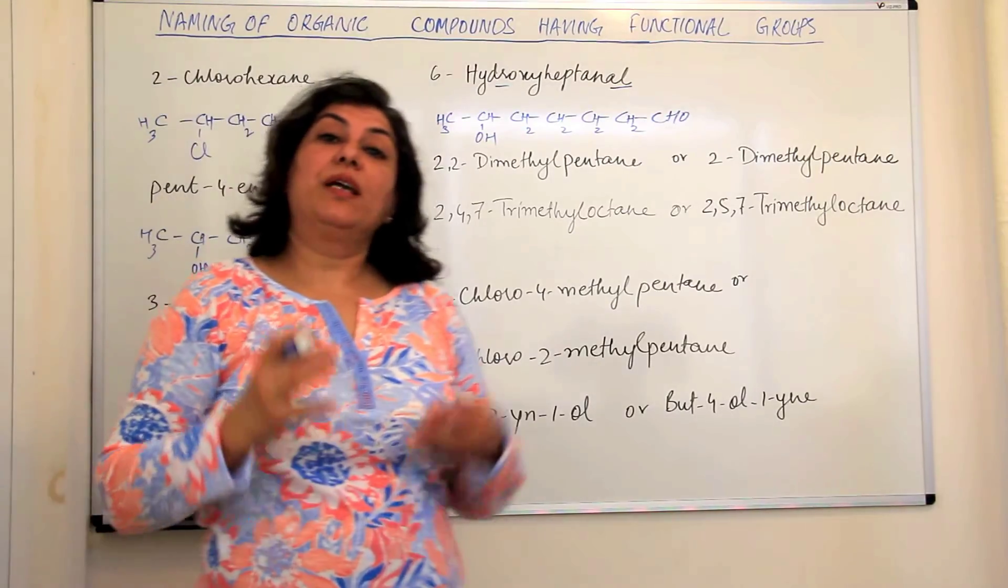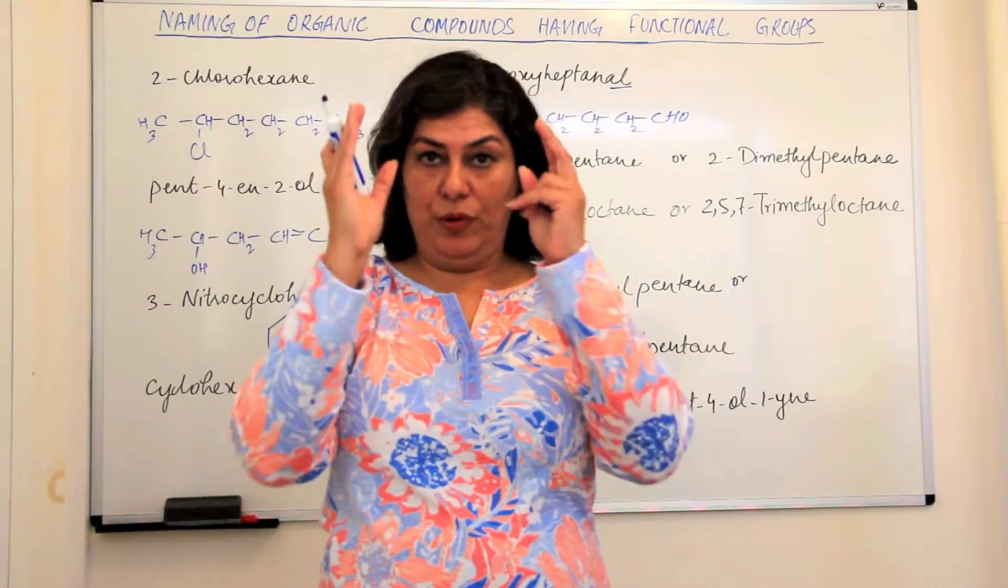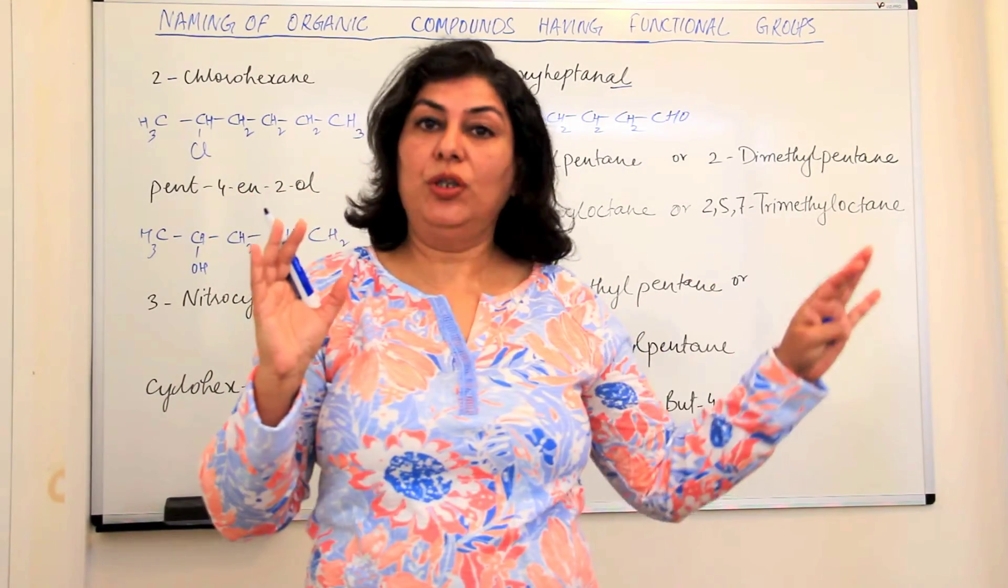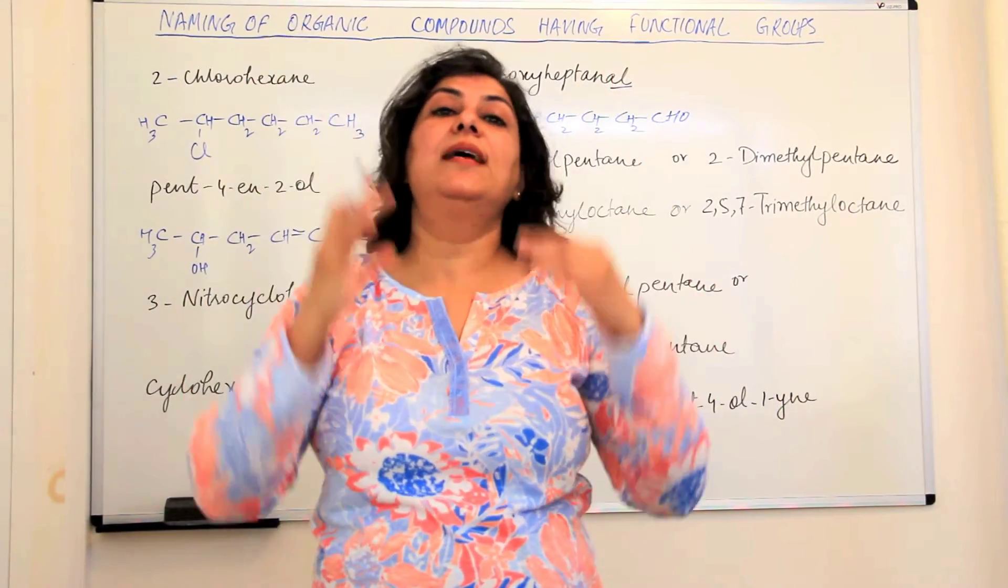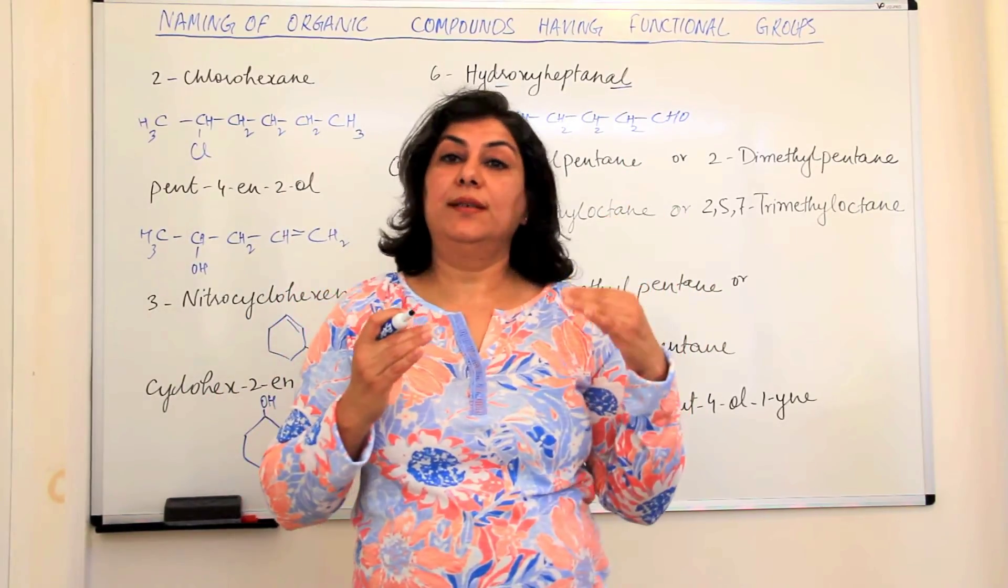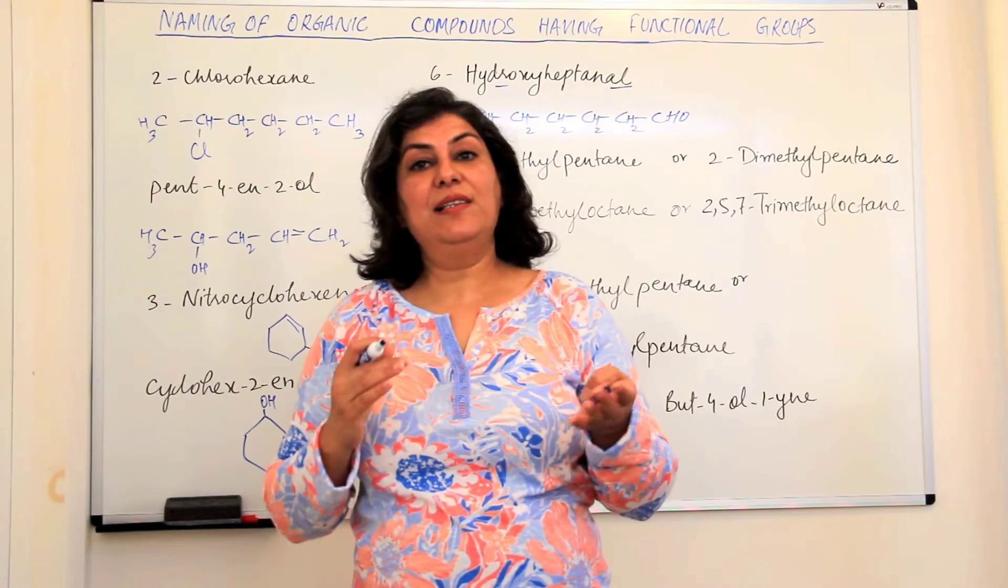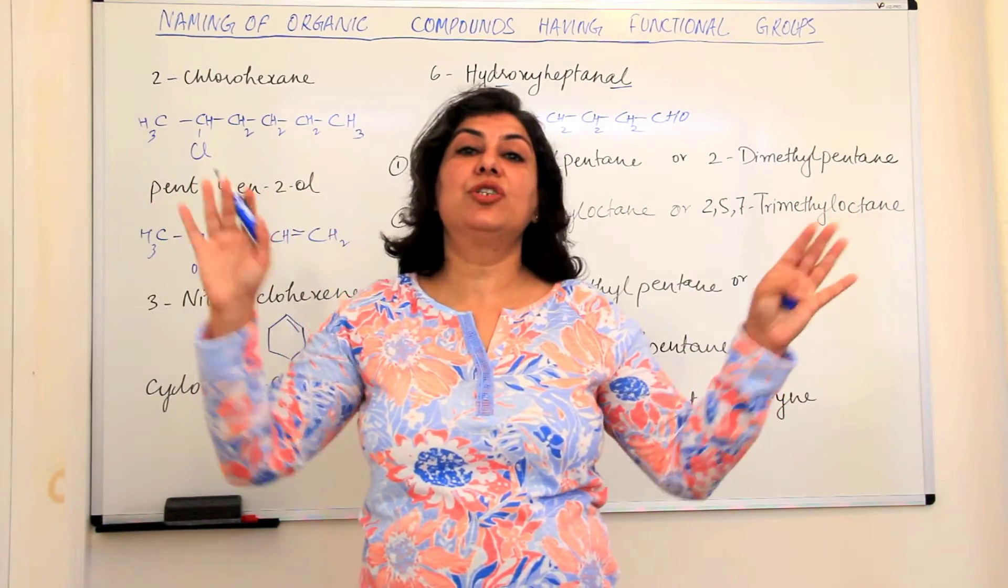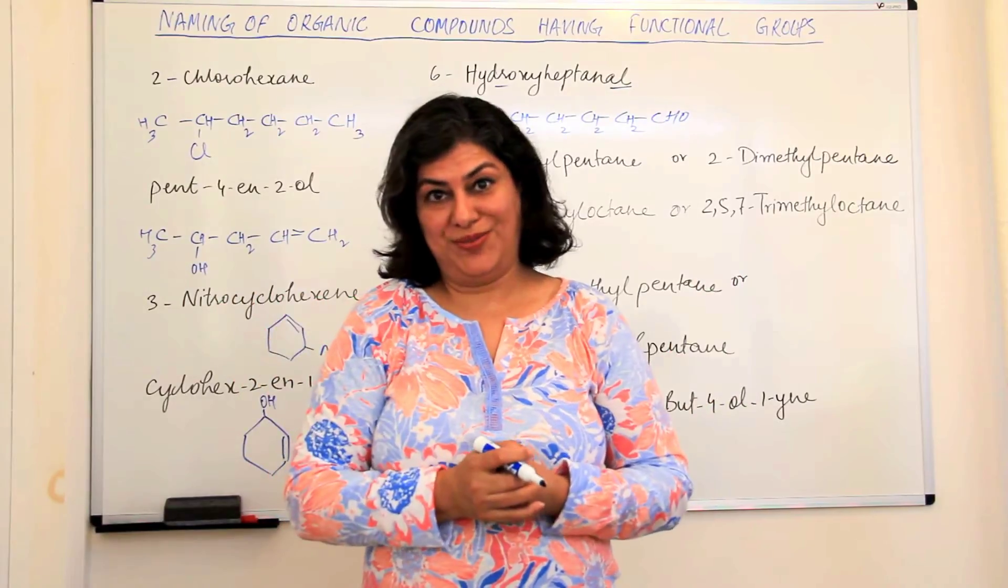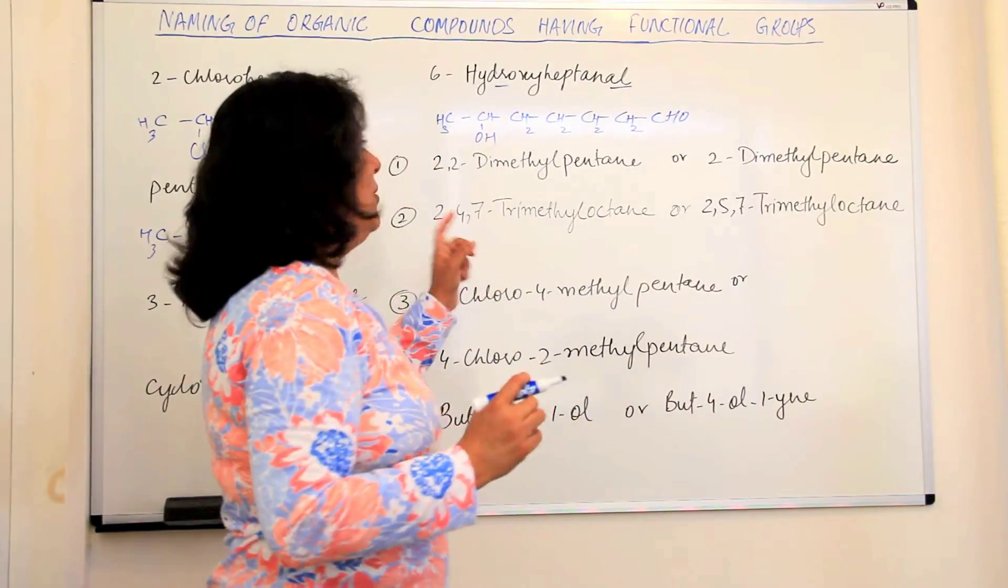So this is what we do when we are given the name of a compound: look for the word root, look whether it's cyclic or not, draw the basic skeletal structure and then start substituting the functional groups or the unsaturation and the final step is filling it up with hydrogens to complete the valencies of all atoms in the molecule.